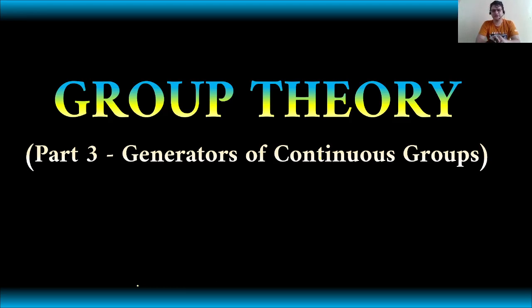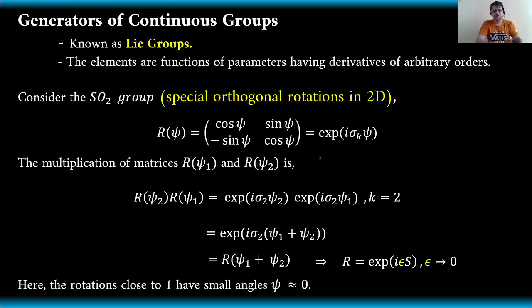Today, we will be discussing the generators of continuous groups. These are known as Lie groups, because this has been introduced by a Norwegian scientist in the name of Lie. The elements are functions of parameters having derivatives of arbitrary orders.